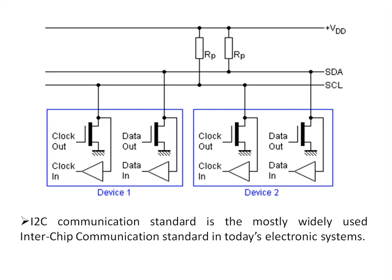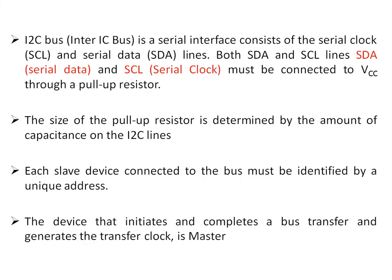Each pin has an open collector switch and a receive buffer. Whenever device one is acting as the master, the open collector switch connected to the SCL line comes into picture. If device two is the slave, the receive buffer connected to the serial clock comes into picture. Whenever device two is sending data, the open collector switch connected to its SDA line comes into picture, and the SDA line of the master acts as an input, so the receive buffer comes into picture.